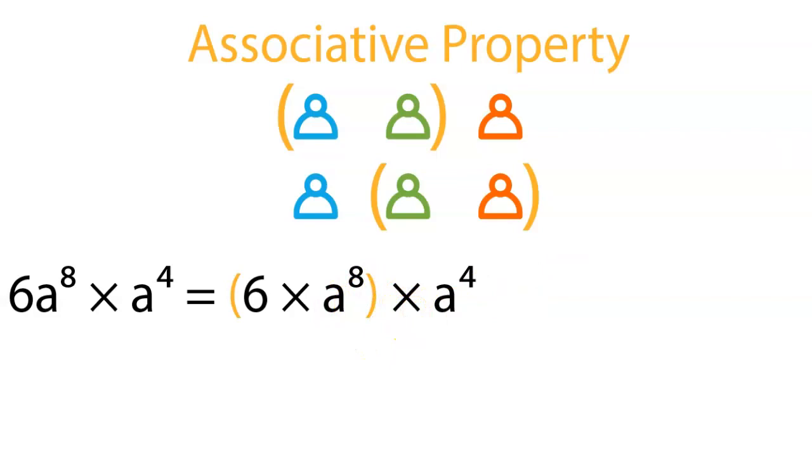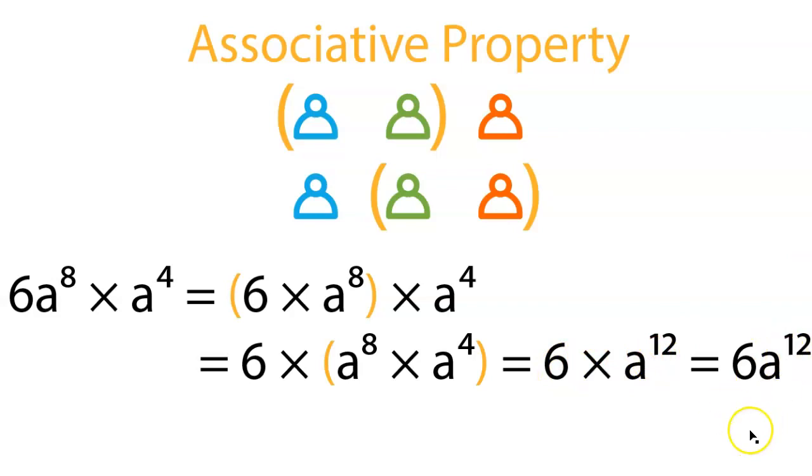And now we're going to do our associative property step. So we're going to boop. So the 6 and the a to the 8th, we're hanging out. Now the a to the 8th power and the a to the 4th power are going to hang out. And we can now simplify those, a to the 12th over here, 6 times a to the 12th. And obviously that simplifies even further, 6a to the 12th.